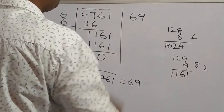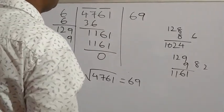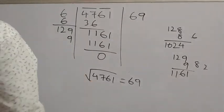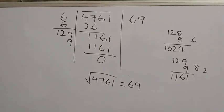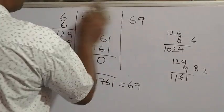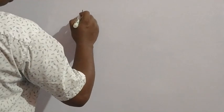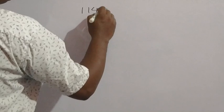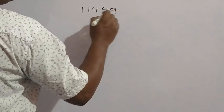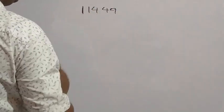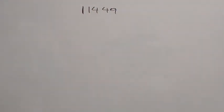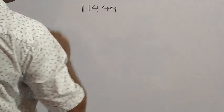This is a 4-digit number I have done. Now I am doing a 5-digit number to find the square root. The next 5-digit number is 11449. We have to find the square root.